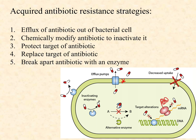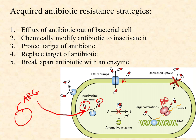Number two is chemically modifying antibiotics to inactivate them. The antibiotic resistance gene on the plasmid produces an enzyme, and that enzyme grabs the antibiotic and modifies it — adds some functional group to it — so that the antibiotic can no longer function. In the antibiotic's normal state it can inhibit whichever bacterial process it targets, but once modified it doesn't work anymore. It's like an on-off switch.